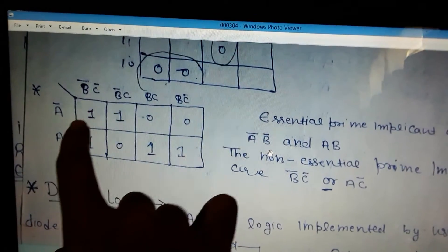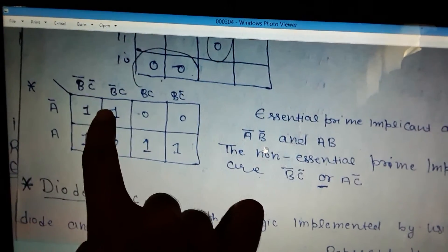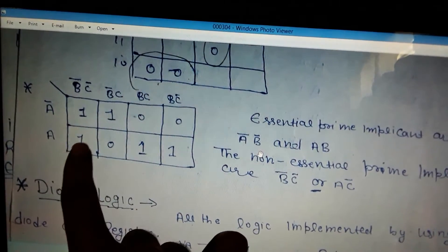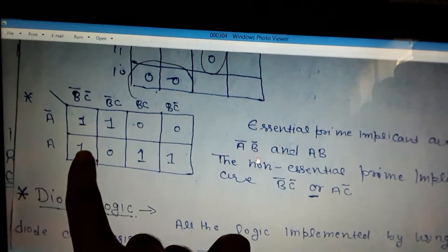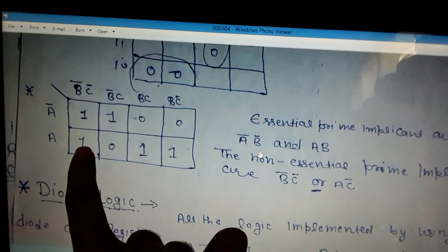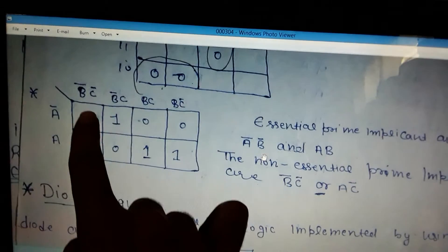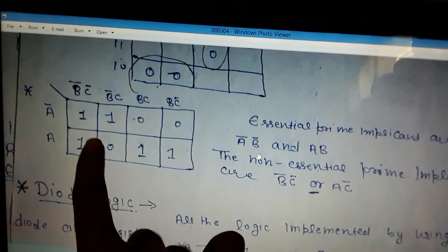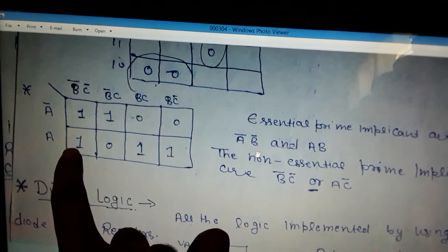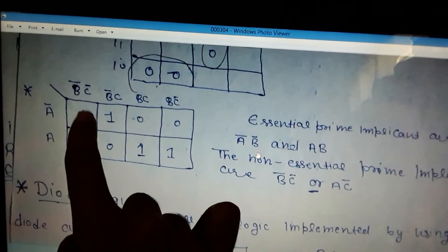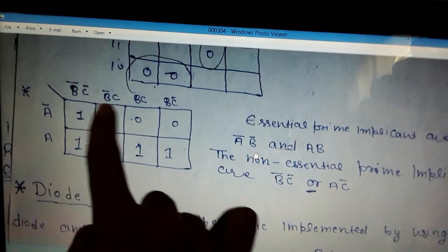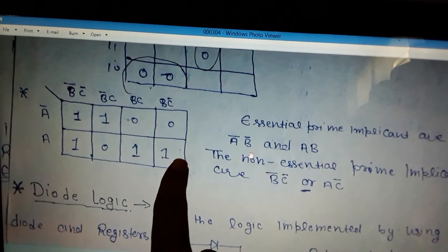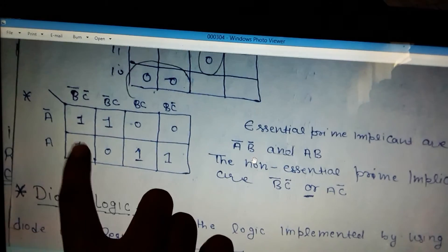Now you will say why is this not essential? You will say that B̅C̅ is not essential. Why is B̅C̅ not essential? Because we can include this one with this and this one with this. So there are two options for these two ones, so these are not essential.